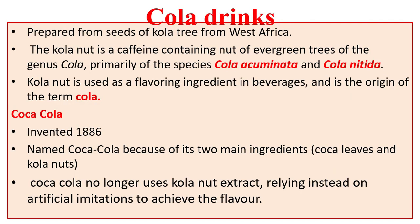Other defects include production of off-flavor upon prolonged storage due to production of delta-lactones from lipids. Cola drinks are prepared from seeds of the cola tree from West Africa. The cola nut is a caffeine-containing nut of evergreen trees of the genus Cola, primarily the species Cola acuminata and Cola nitida. Cola nut is used as a flavoring ingredient in beverages and is the origin of the term 'cola.' Note: this coca is entirely different from the cocoa used to make chocolate. Coca-Cola, invented in 1886, was named after its two main ingredients — coca leaves and cola nuts — but no longer uses cola nut extract, relying instead on artificial imitations.